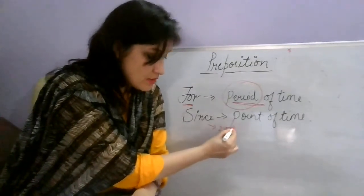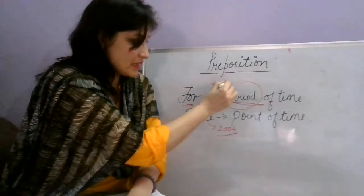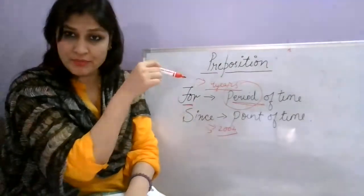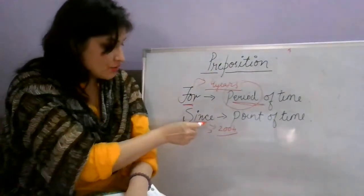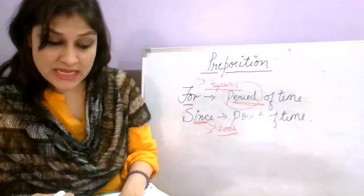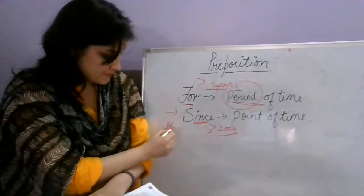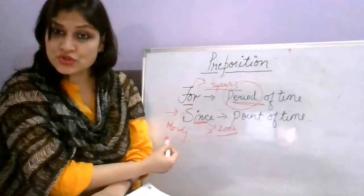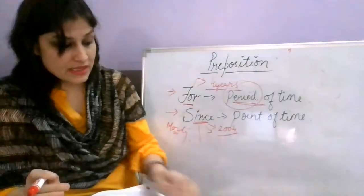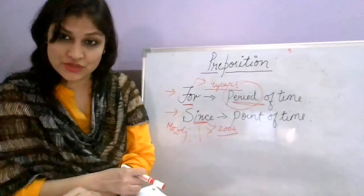So with 'since' you give the exact time, and with 'for' you give a general period. Another example: 'the patient has been suffering since Monday last' — here Monday is the exact given day. To summarize: use 'for' for a period of time, and 'since' for an exact given point of time. This is a very important distinction. The rest will continue in the next video. Thank you.